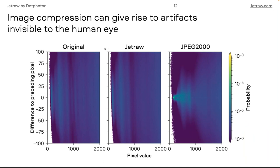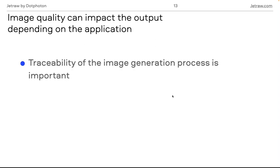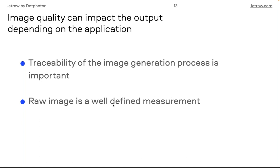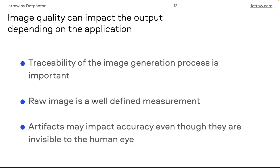Another type of processing that can produce artifacts is compression. JPEG 2000, for example, gives rise to images that look exactly the same to the human eye, but when you apply a simple difference between two consecutive pixels, the original image has no biases, JETRAW also adds no biases, but with JPEG 2000 some artifacts appear. Basically, if we know how to trace back how the image was generated, we can understand the errors and propagate them correctly, so artifacts invisible to the human eye do not impact machine vision applications.